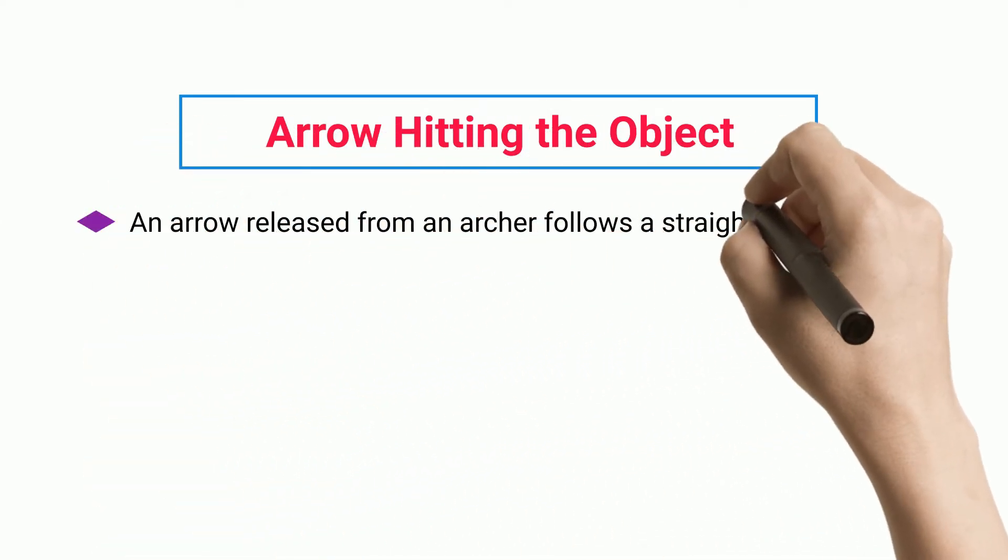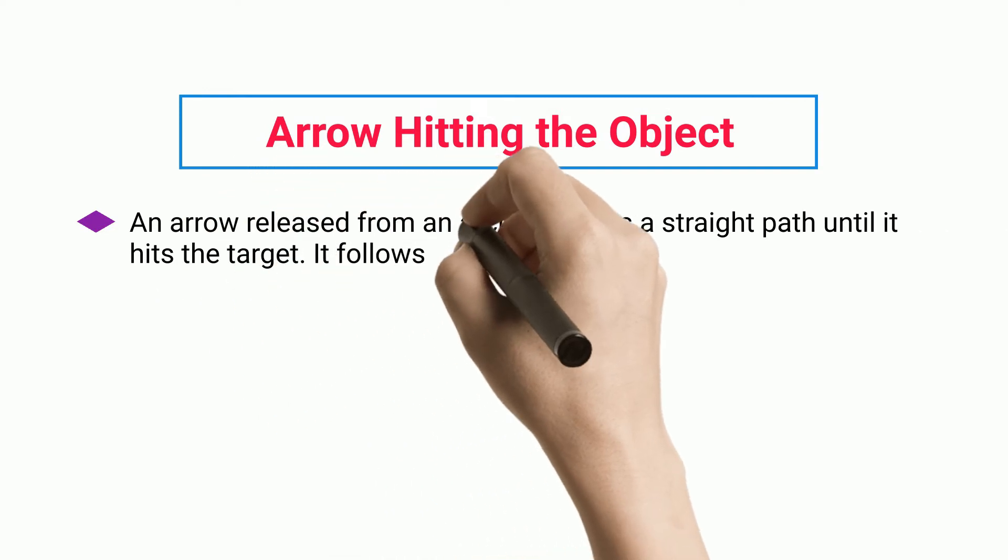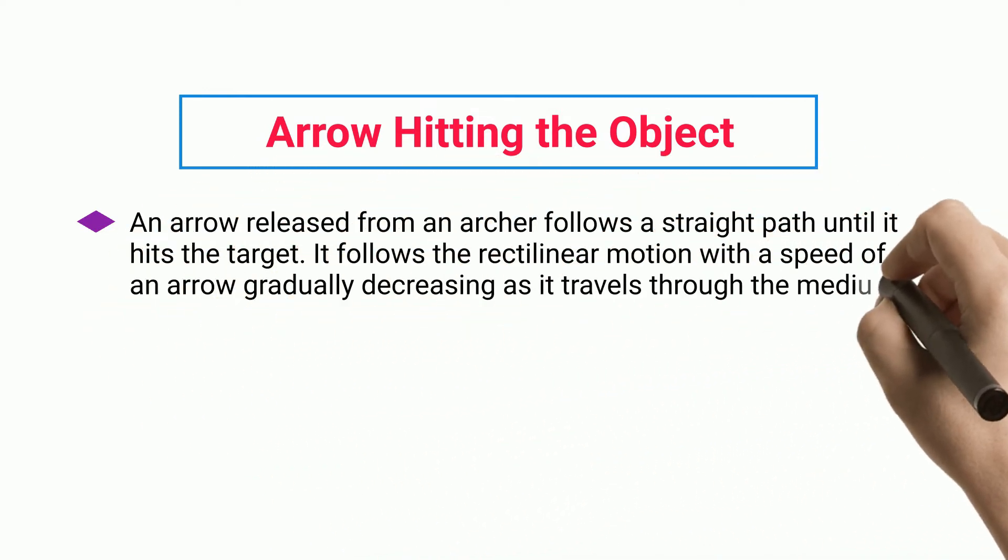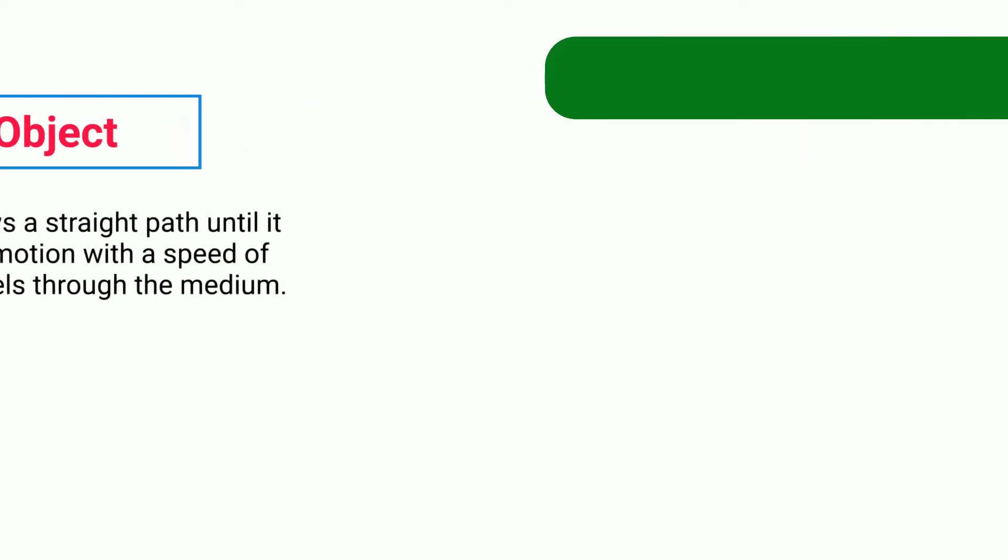Arrow hitting the object: An arrow released from an archer follows a straight path until it hits the target. It follows the rectilinear motion with the speed of an arrow gradually decreasing as it travels through the medium.